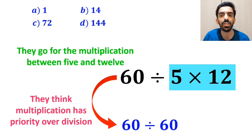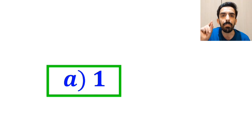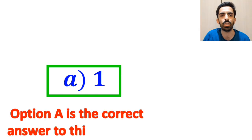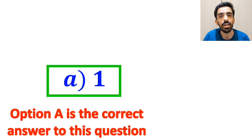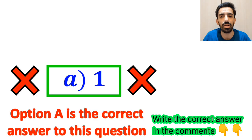So, this expression simplifies to 60 divided by 60, which finally gives them the answer 1. And immediately, they quickly say that option A is the correct answer to this question. However, it's not the correct answer to this question.